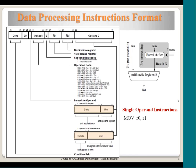For a single-operand instruction like MOV, only one operand is needed — the destination register is not an operand. For example, MOV R0, R1 — R0 is the destination Rd and R1 is the operand Rm. In a single-operand instruction, the operand is always treated as Rm, not Rn. So Rm would be encoded as 0001 for R1, and Rd would be encoded as 0000 for R0. Rn is ignored by the processor for single-operand instructions.